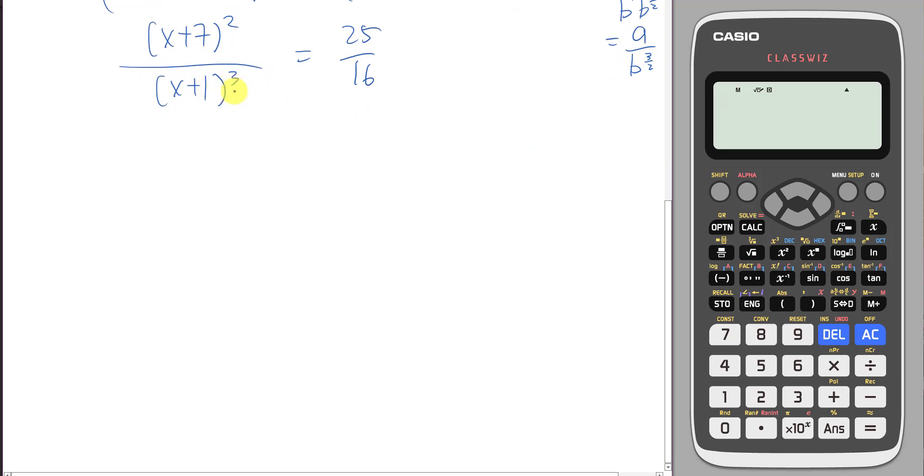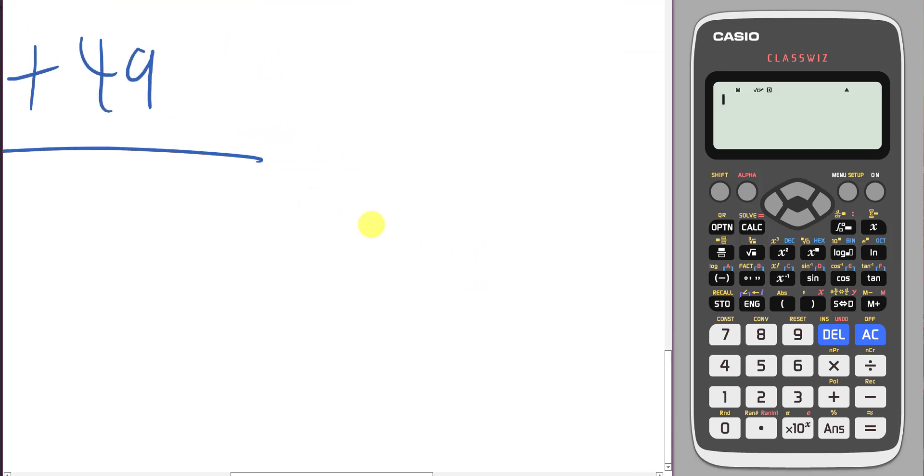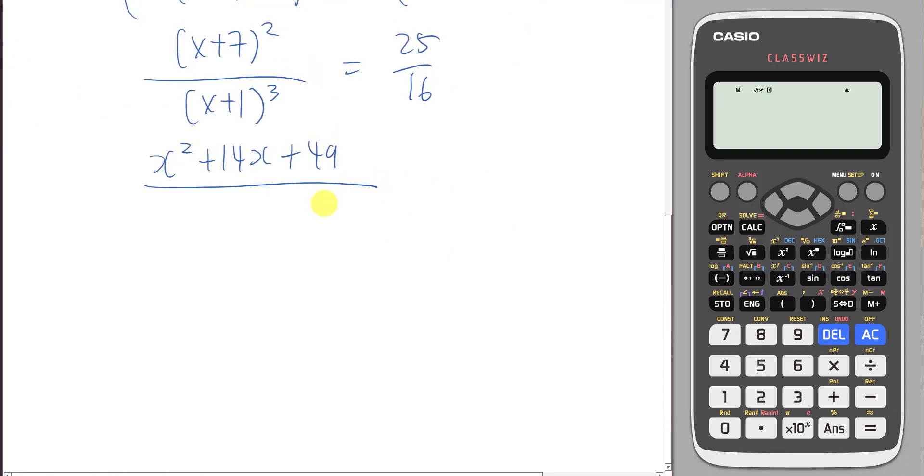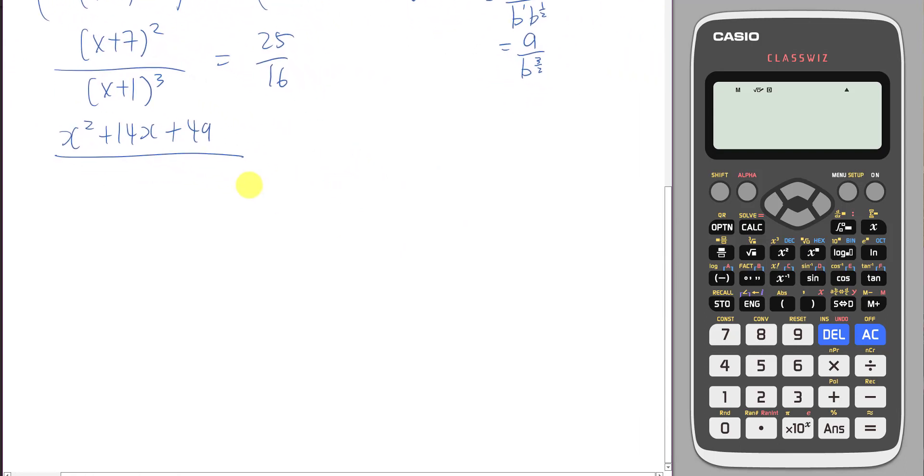So here I will get x plus 7 square. Bottom, I will get x plus 1 power of 3 equals to 25 over 16. Until now, it's still not so simple because you have a cubic equation. So let's expand this one. So this one is basically x square plus 14x plus 49. This one, if I expand, I can use binomial expansion and then I should get x cube plus 3x square plus 3x plus 1.